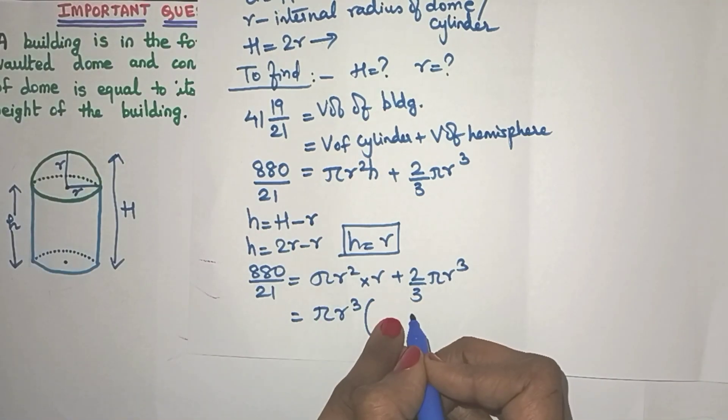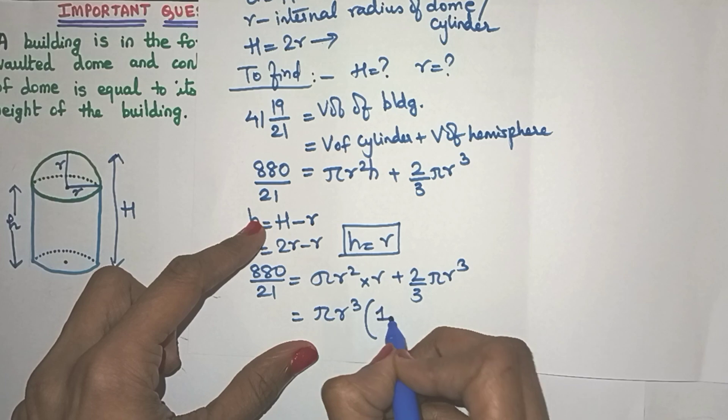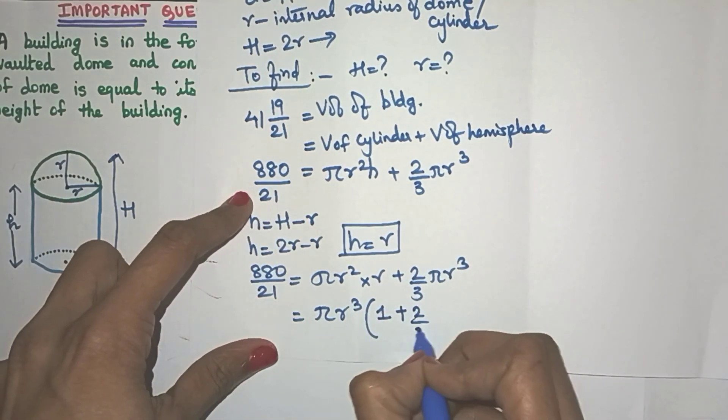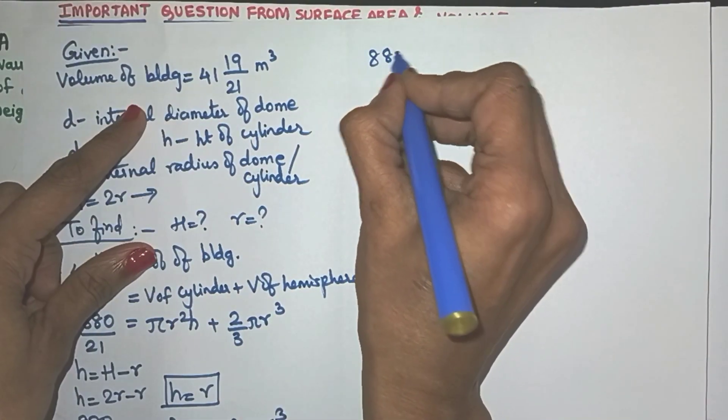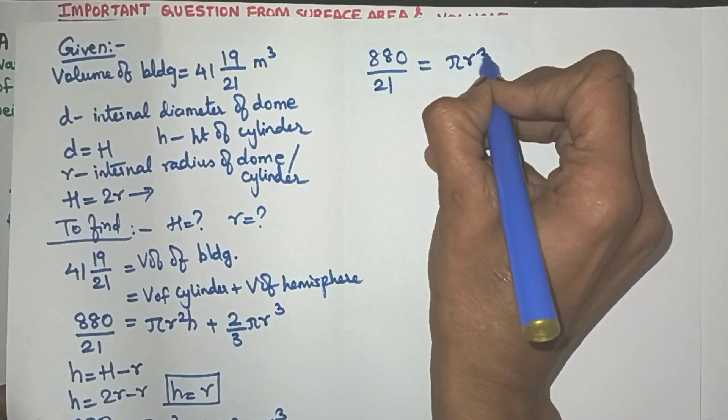So definitely pi is common and there is an R cube in both the terms. So let me take R cube common. So what is remaining here friends? If I take pi R cube common from pi R cube, what is inside? Yes, 1. And here if I take out pi R cube, I will get 2 by 3. I hope you got this. So now let me just arrange it.